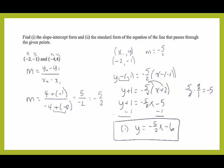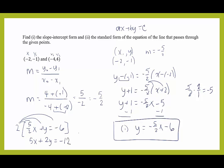Step two: write it in standard form ax plus by equals c. Starting from y equals negative 5 over 2 x minus 6, I add 5 over 2 x to both sides: 5 over 2 x plus y equals negative 6. Since 5 over 2 is not an integer, I multiply every term by 2, giving 5x plus 2y equals negative 12. That's the standard form.